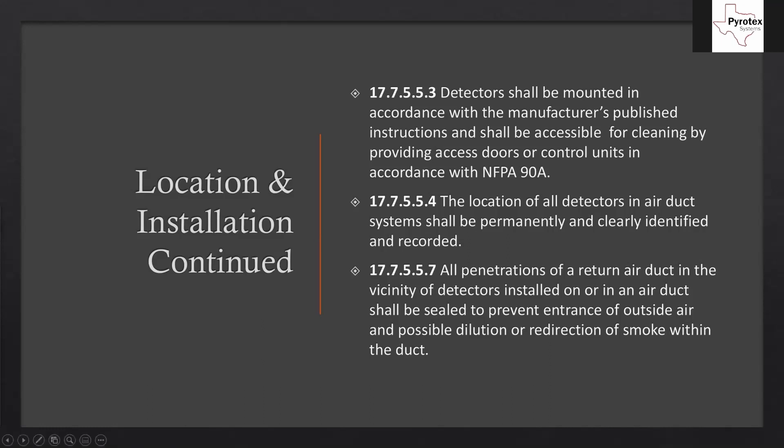The last point: all penetrations of a return air duct in the vicinity of detectors installed on or in an air duct shall be sealed to prevent entrance of outside air and possible dilution or redirection of smoke within the duct. Where the duct detector housing meets the duct, we need to seal it — aluminum duct tape works well. The venturi vacuum effect can be compromised if it's not sealed properly, allowing smoke to leak around the housing instead of passing through the detector.